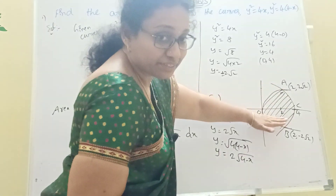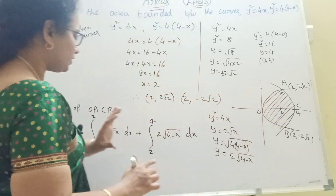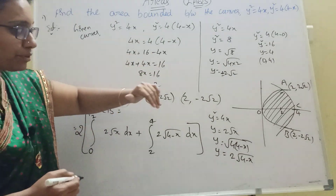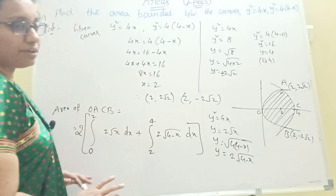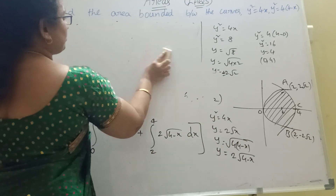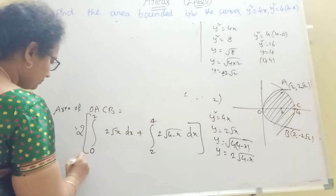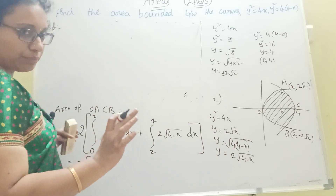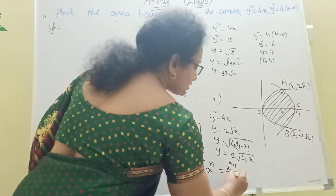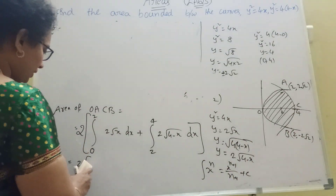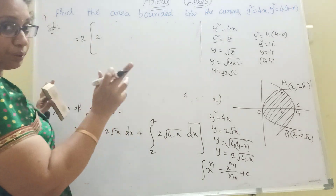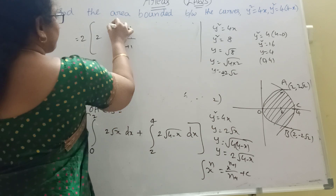We need to find the two coordinates and set up the integration. Using the formula: integration of x to the power n equals x to the power (n plus 1) divided by (n plus 1), plus c. Here the power of root x is 1 by 2. So x to the power 1 by 2 plus 1, divided by 1 by 2 plus 1.